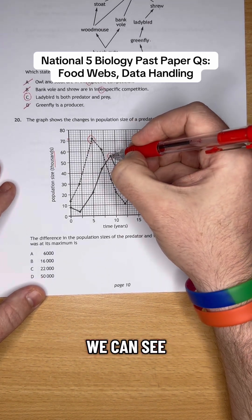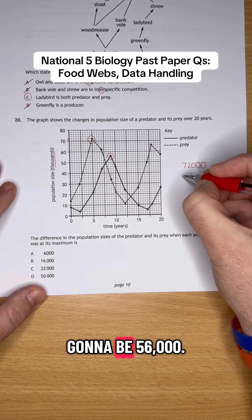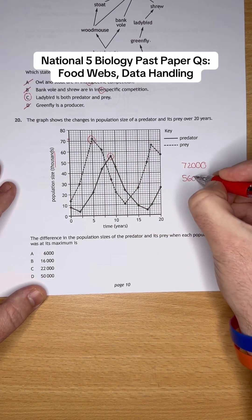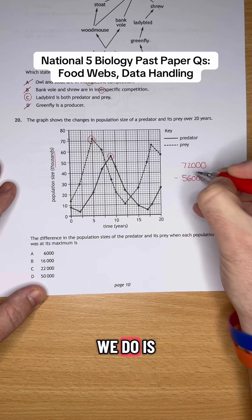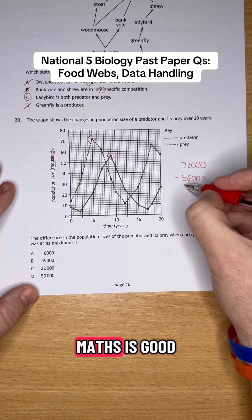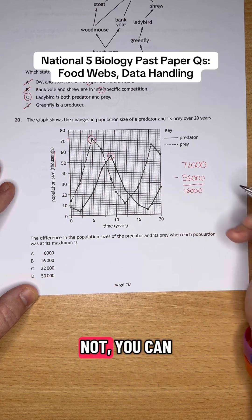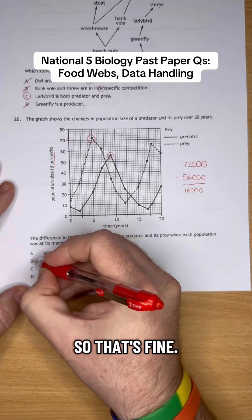For the predator, we can see that's going to be 56, so that's going to be 56,000. And all we do is do 72,000 take away 56,000. And hopefully our maths is good enough to know that that's going to be 16,000. Even if it's not, you can use a calculator in the exam, so that's fine.